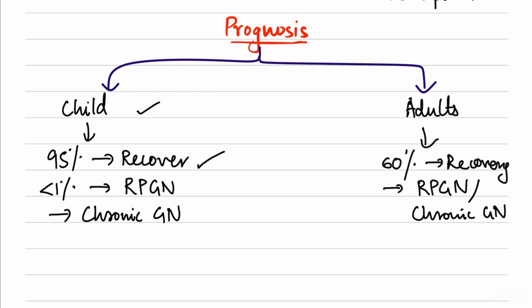There are several other types of glomerulonephritis, but the pathogenesis of most is immune complex mediated.